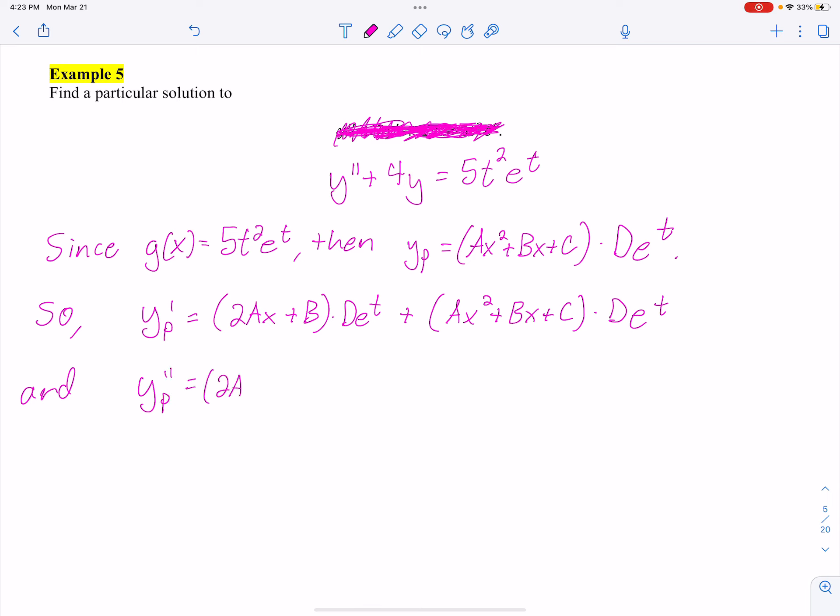Now we have two product rules. So I got 2A times De^t, plus I leave the first one alone, 2Ax + B, and I take the derivative of De^t, which is just De^t. Derivative of my second part is product rule again. So 2Ax + B times De^t, plus the whole thing, x² + Bx + C, times its derivative of the second, which is just that.